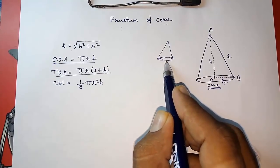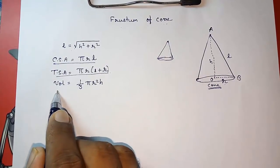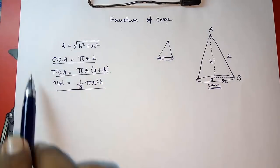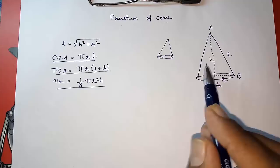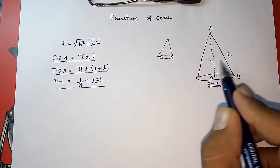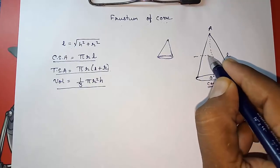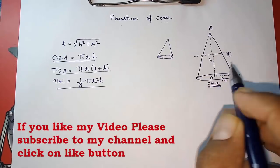If you want to find the volume, that is 1 by 3 pi r square h. Now, why we had done this? Because frustum of cone is a part of cone.